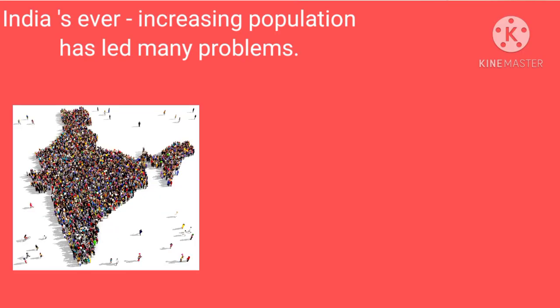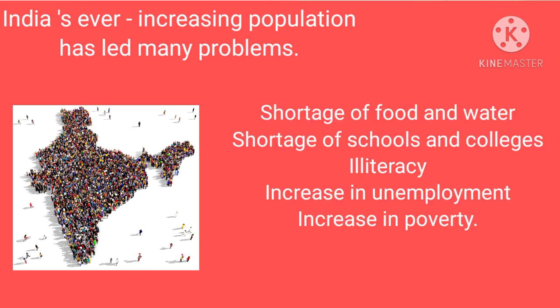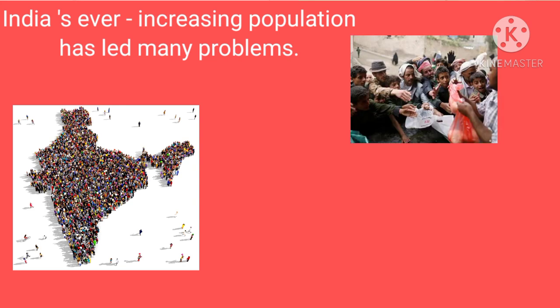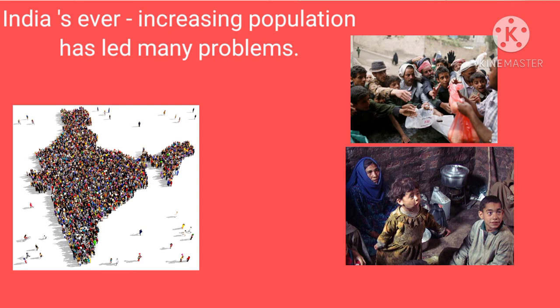India's ever-increasing population has led to many problems. A few of them are shortage of food and water, shortage of schools and colleges in the country, illiteracy, increase in unemployment, and increase in poverty. Most people in the country earn less than their daily needs — they do not earn enough to fulfill their needs. This is the main reason India has a large population living below the poverty line.